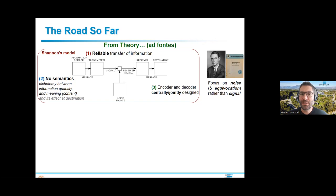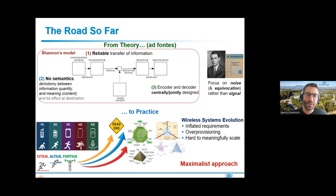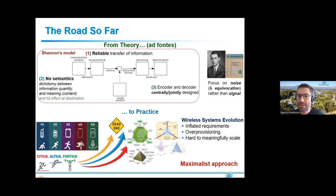There's a third point that we normally forget: we assume that codebooks are jointly or centrally designed and both ends communicate with the same codebook, meaning some kind of protocol has already been established. This might not hold for autonomous or multi-agent systems. In practice, this drove the 4G, 5G, and now 6G discussion. My claim is that the approach taken so far is what I call a maximalistic approach — the network over-provisions resources to guarantee a certain quality of service.